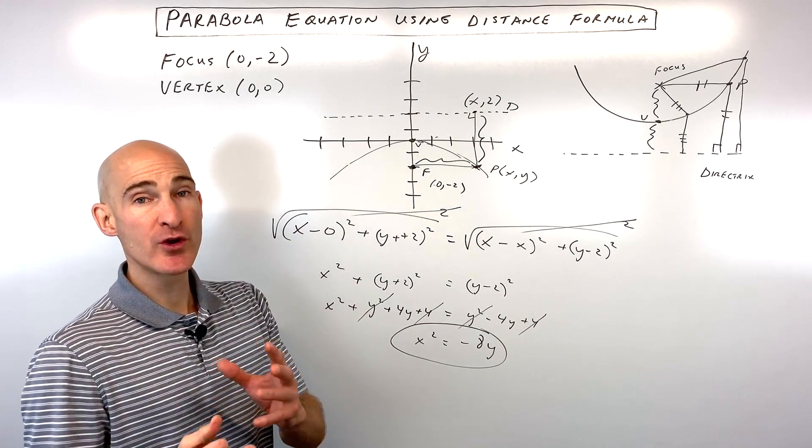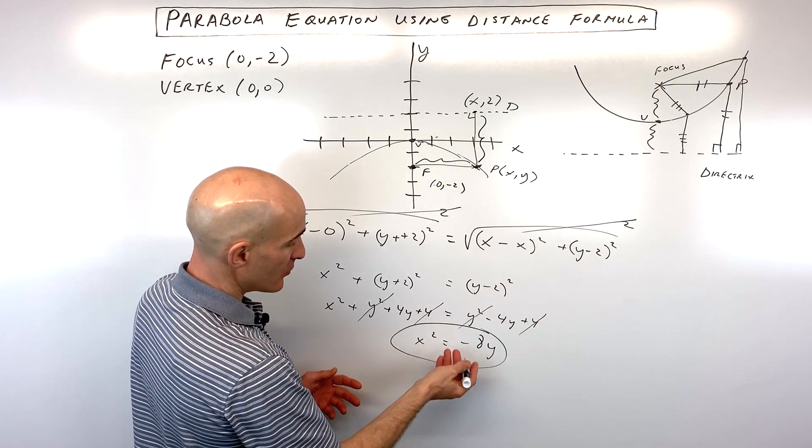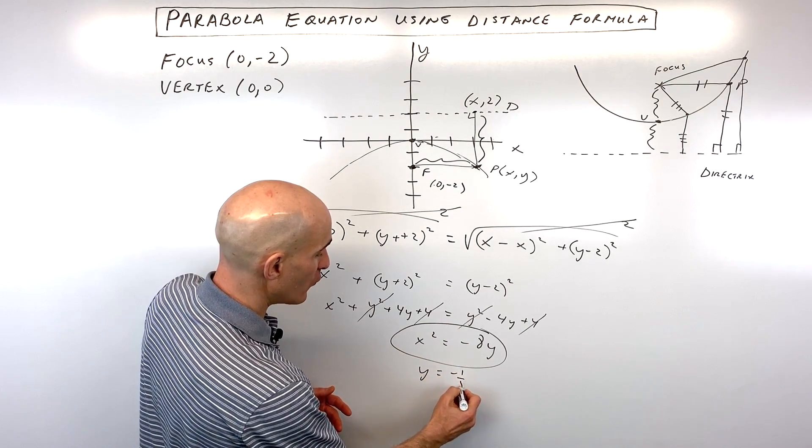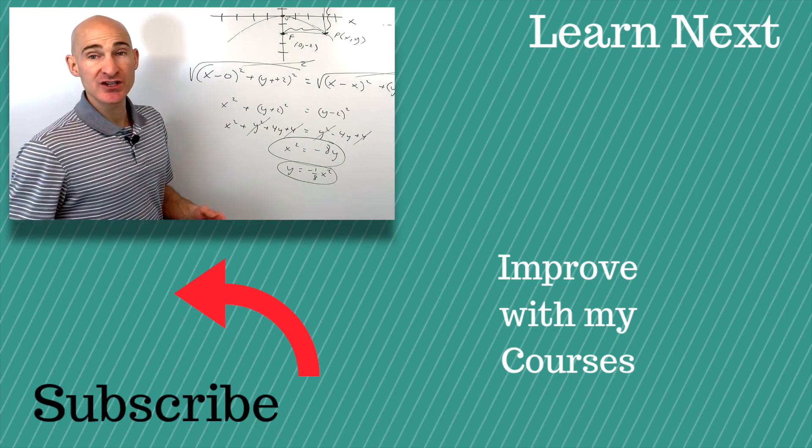And that's the equation of your parabola. Now you can rewrite it. I could divide both sides by -8 or multiply both sides by the reciprocal -1/8. And we could get y = -1/8 x². That's another way to write it. And that's the equation of your parabola.